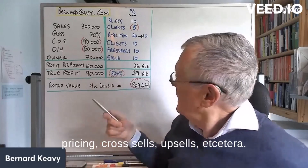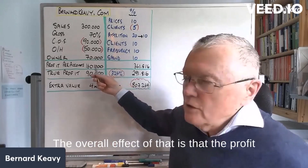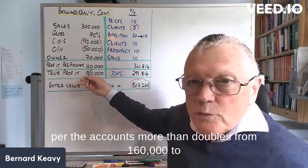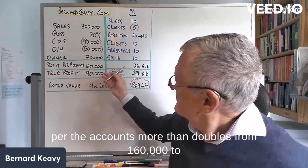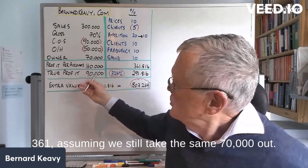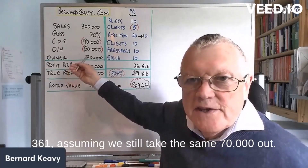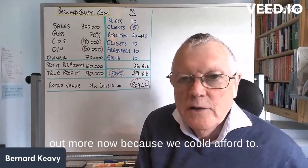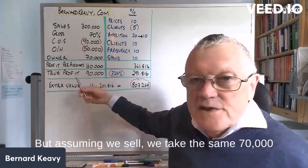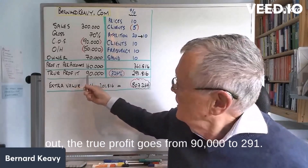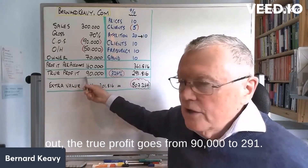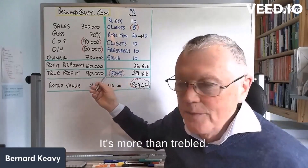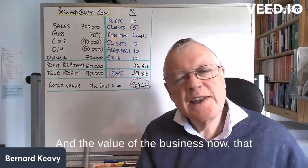The overall effect is that the profit per the accounts more than doubles, from £160,000 to £361,000 — assuming we still take the same £70,000 out. Of course, we could take out more now because we can afford to, but assuming we take the same £70,000, the true profit goes from £90,000 to £291,000. It's more than treble.